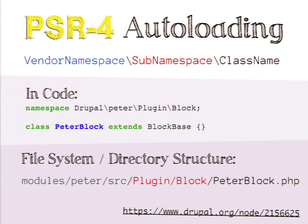PSR4 is a PHP standard for mapping a PHP namespace to the location of a file on disk. Really, all you're doing is saying the file that contains the class with this name is located in this particular spot.